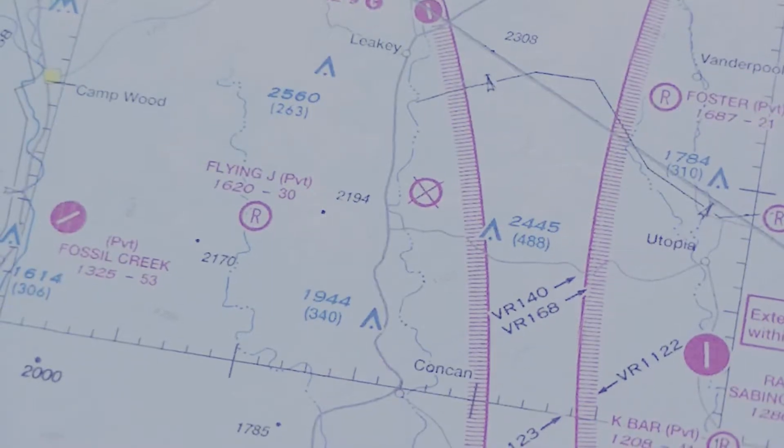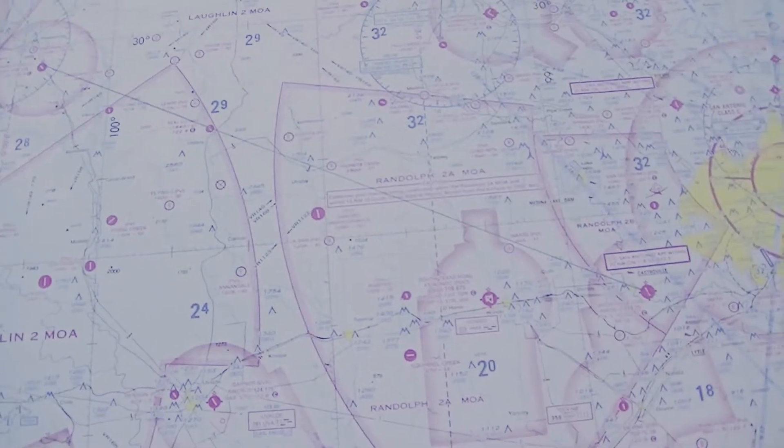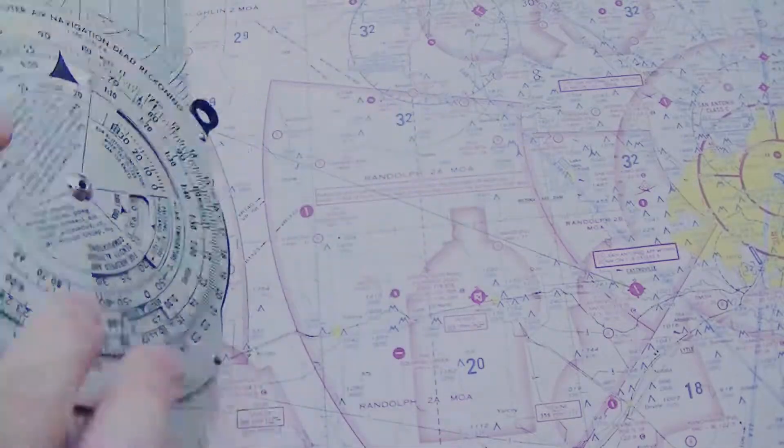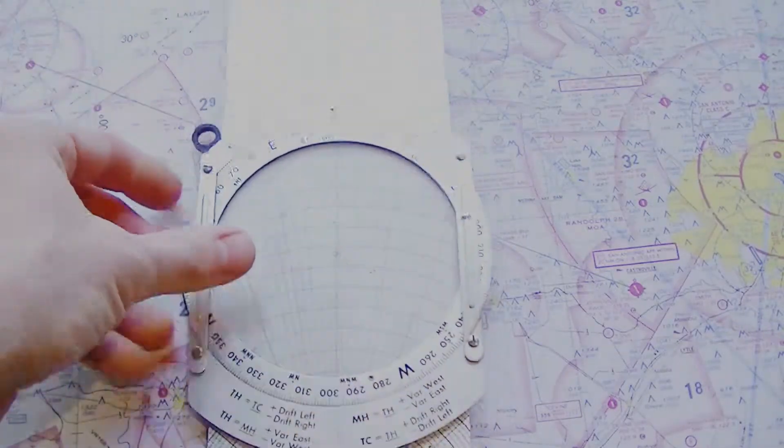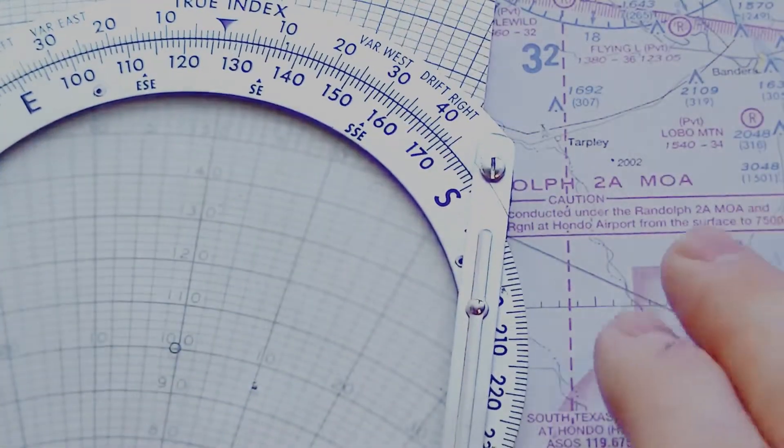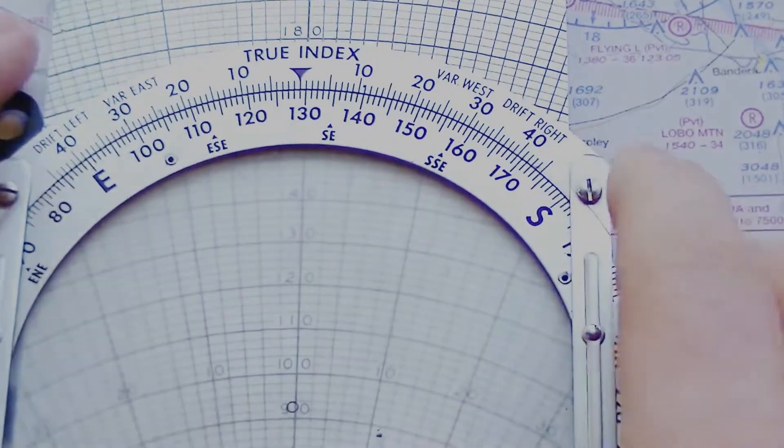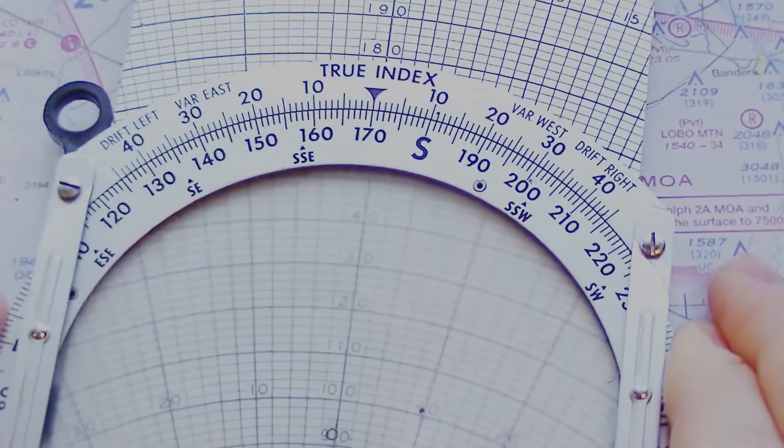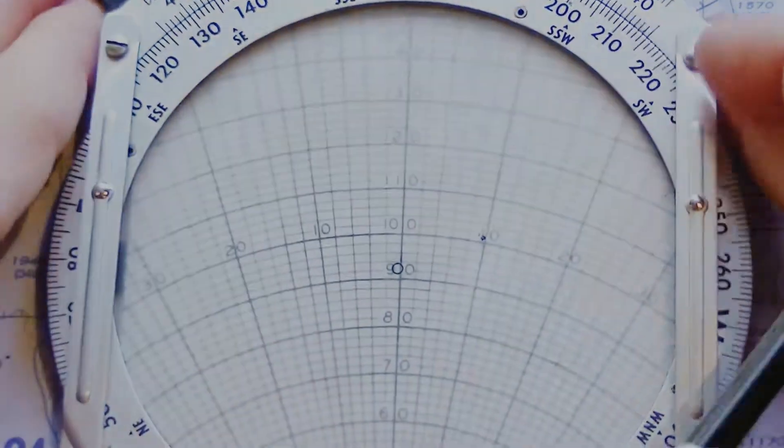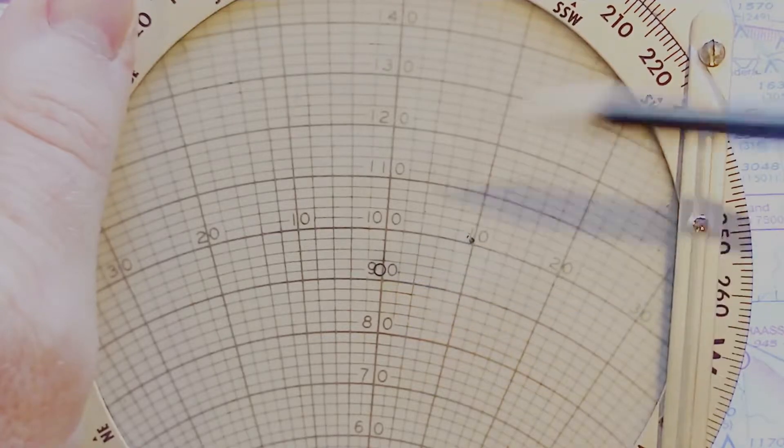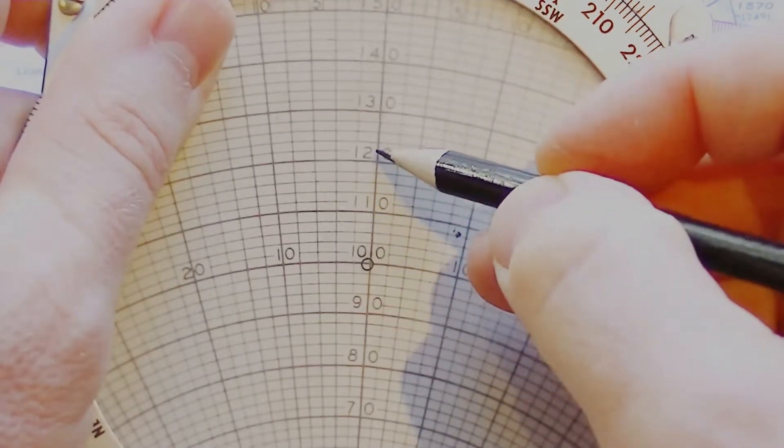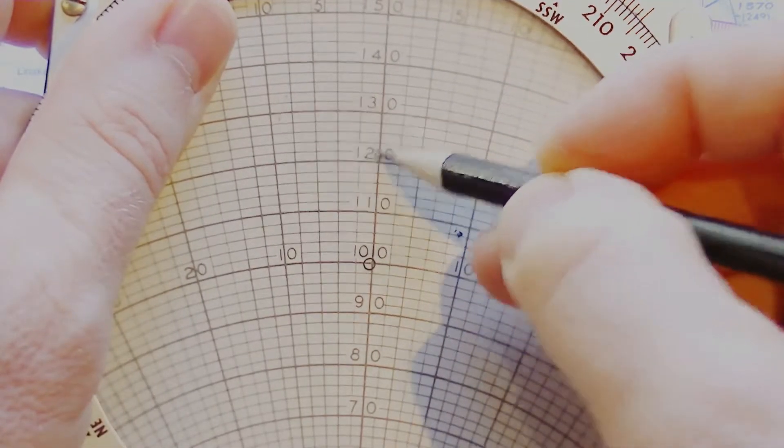Let's just hypothetically say that our winds aloft forecast for this route, we're going to be at 170 at 22 knots. So I'll take my E6B flight computer, the old manual type. Flip it over to the wind side. And first I'll plug in my winds. We'll rotate this so that our true index is right on 170, the wind direction. And then I want to plug in the wind speed. The center point here is my datum. I'll put that on 100 so I can easily measure up to 22. So I've got the wind information plugged in.